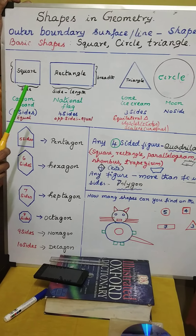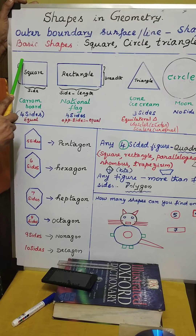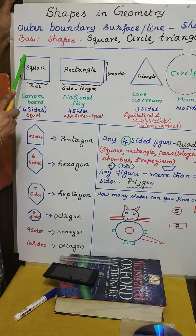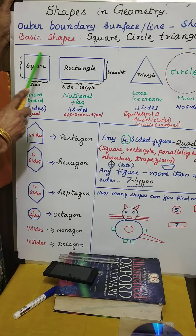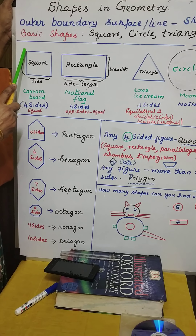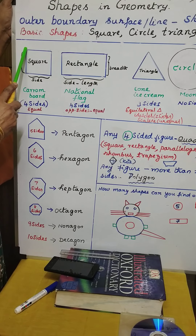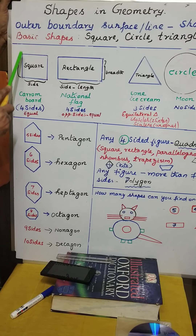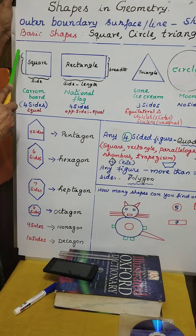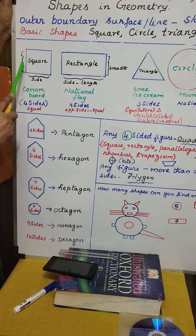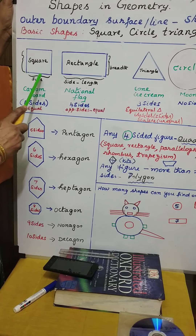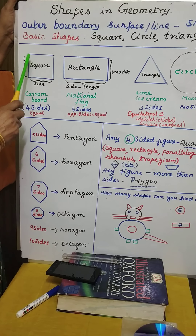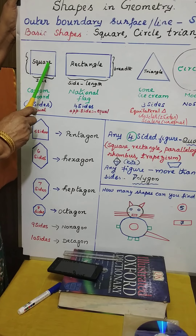First let us see the square. A square goes from one point to another — it is a line which is joined. These two points form what is called a side. This is one side, this is another side, this is another side. Totally, there are four sides.